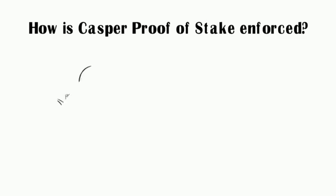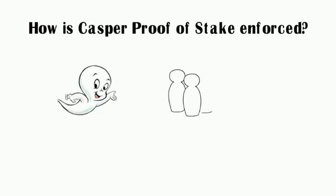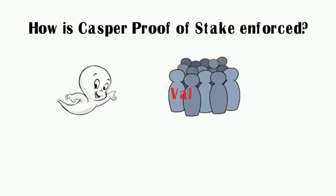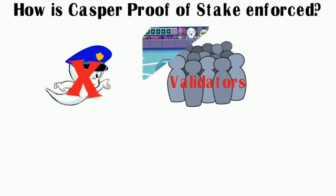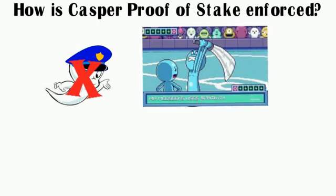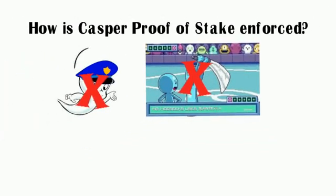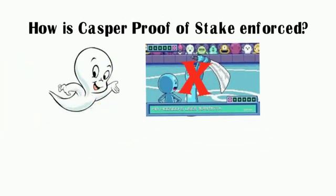Now that we know how validators vote, we must see how it is enforced. Casper is a smart contract with game-theory-based rules that allow for proof-of-stake consensus. But Casper doesn't enforce its own rules, and there aren't any special validators with authority to slash bad validators.